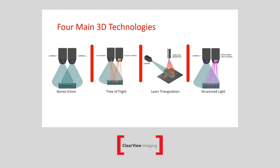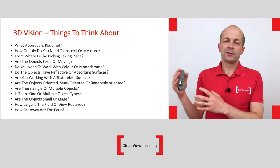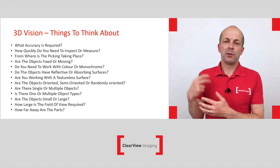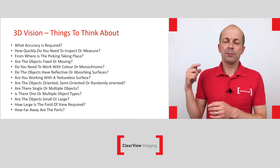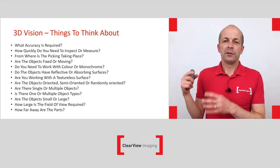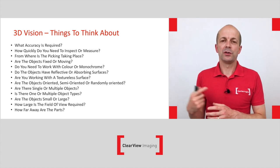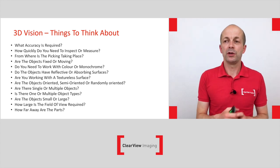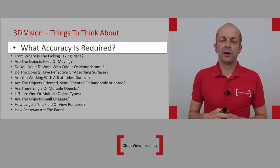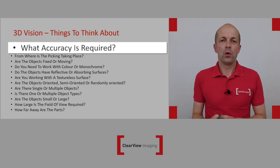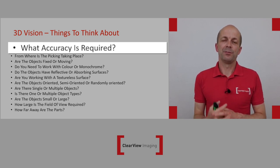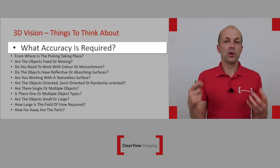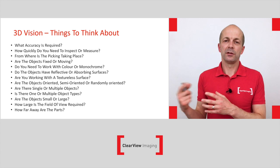Before going through those technologies in detail, there's a list of questions to consider — some similar to those you'd ask for a 2D vision system, but some different. Depending on the answers, they'll lead you to the right one of those four technologies. The first question is: what accuracy is required? The four technologies all have very different 3D accuracies, so if you need a very high accuracy vision system but choose a technology that can't meet that, you're not going to achieve your overall goals.